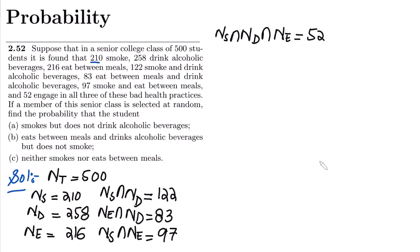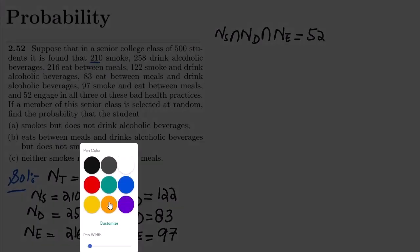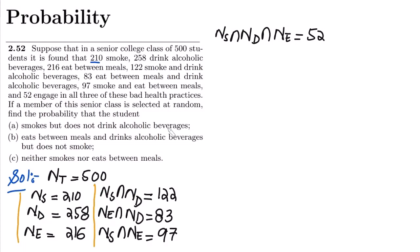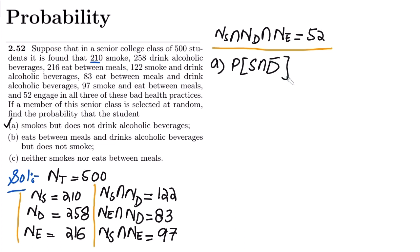So these are the data samples given to us. Now, part (a) requires us to find the probability that a randomly selected student smokes but does not drink alcoholic beverages.